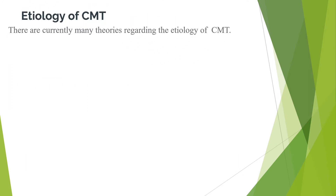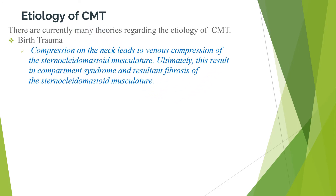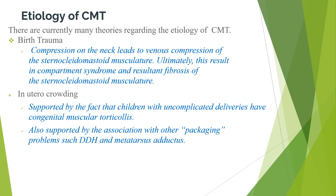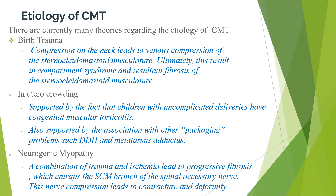Regarding the etiology of congenital muscular torticollis, there are currently many theories. The first is birth trauma: compression on the neck leads to venous compression of the sternocleidomastoid musculature, resulting in compartment syndrome and fibrosis. The second is in utero crowding, supported by cases in uncomplicated deliveries and the association with developmental dysplasia of the hip and metatarsus adductus. The third theory is neurogenic myopathy: a combination of trauma and ischemia leads to progressive fibrosis, interrupting the sternocleidomastoid muscle branch of the spinal accessory nerve, causing contracture and deformity.